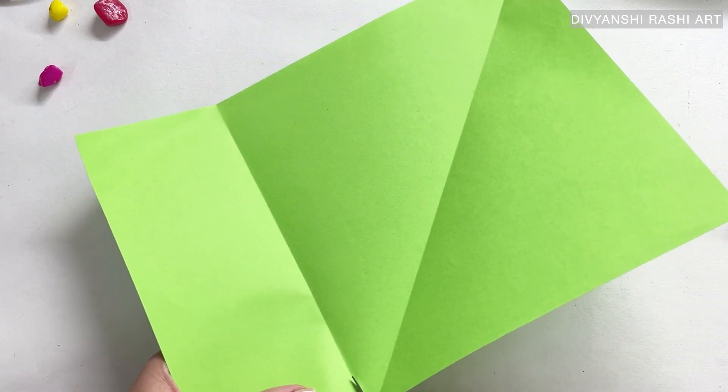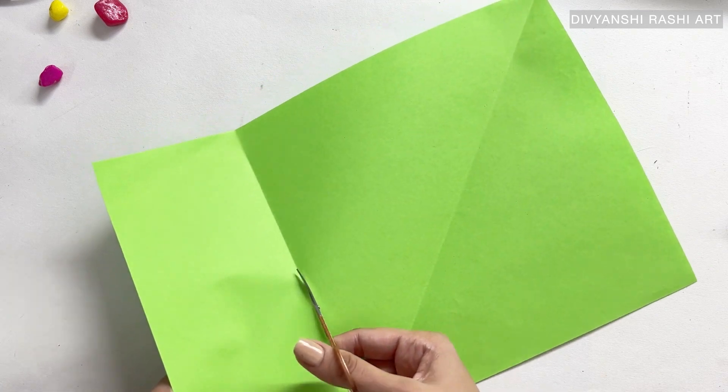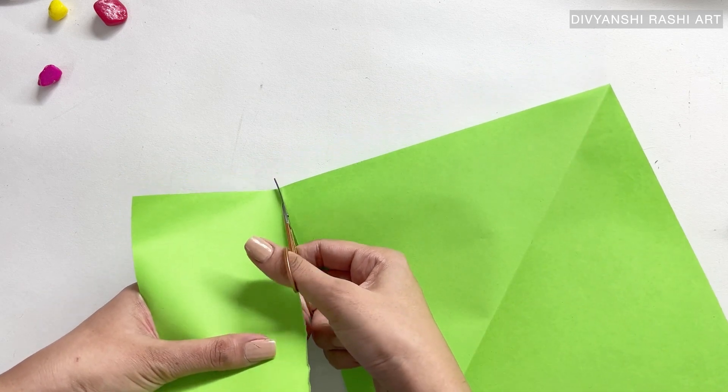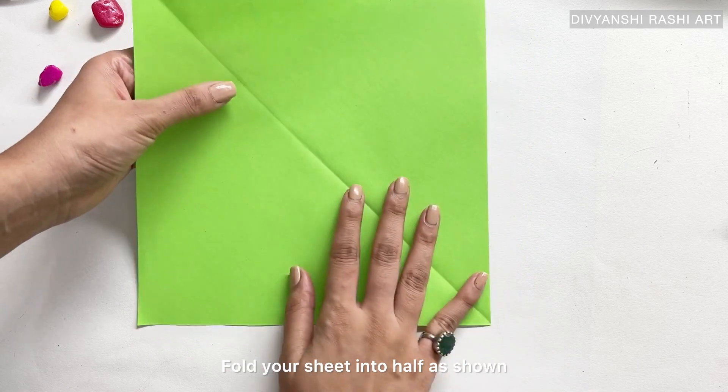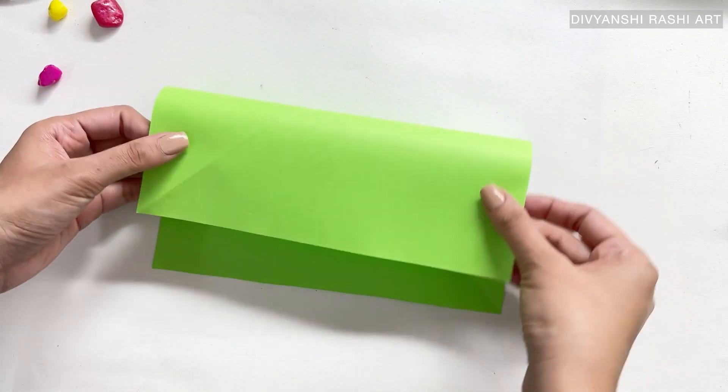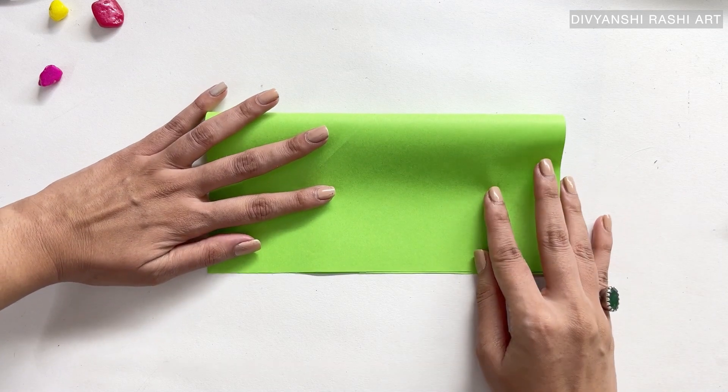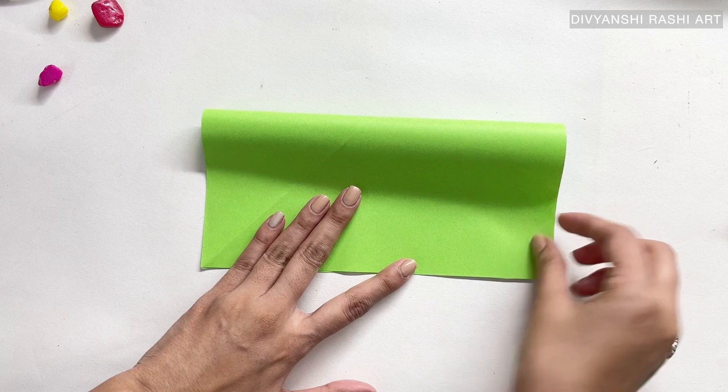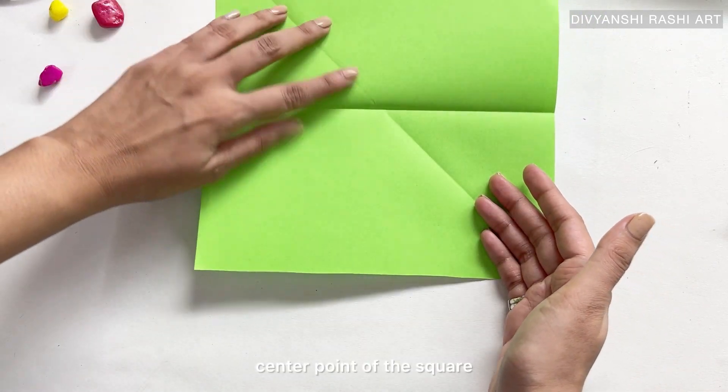Fold your sheet into half as shown. Make sure you do this process with steady hands and carefully so that you do not get unnecessary creases. After opening this fold, you will get the center point of the square.